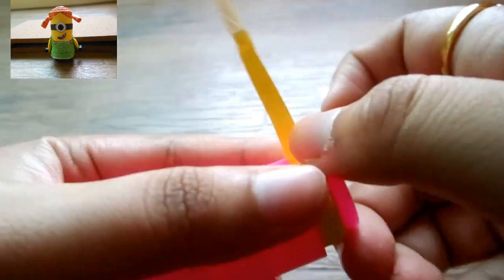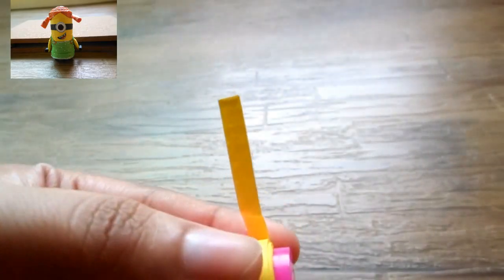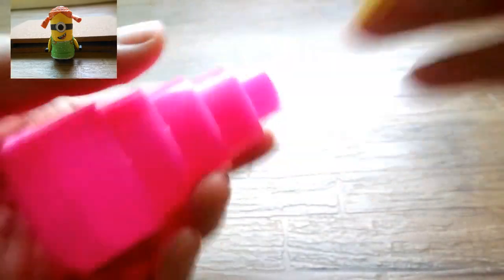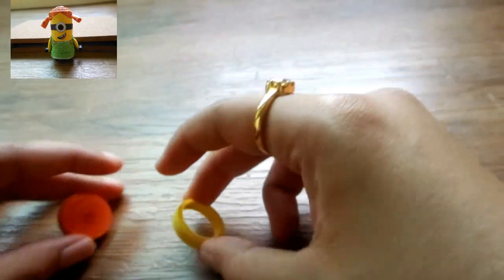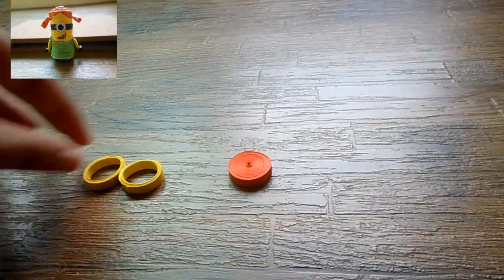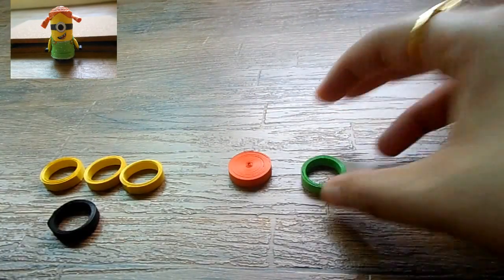To know more about the specifications of the paper strips used for each part, check out my blog post in the link in the description below. So, these are the parts that I need to create the main frame of the body.